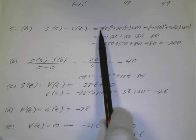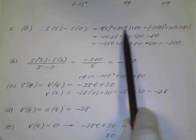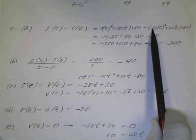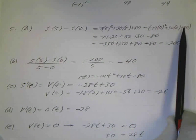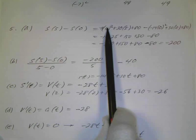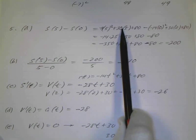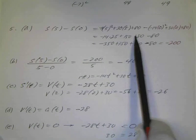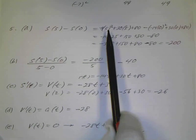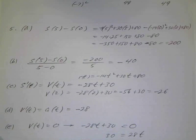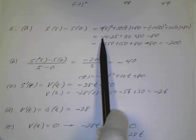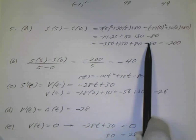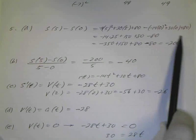Plugging in: negative 14 times 25 plus 150 plus 80, minus 80. The 80s cancel. 14 times 25 is 350, so negative 350 plus 150 is negative 200. The displacement is negative 200 feet.